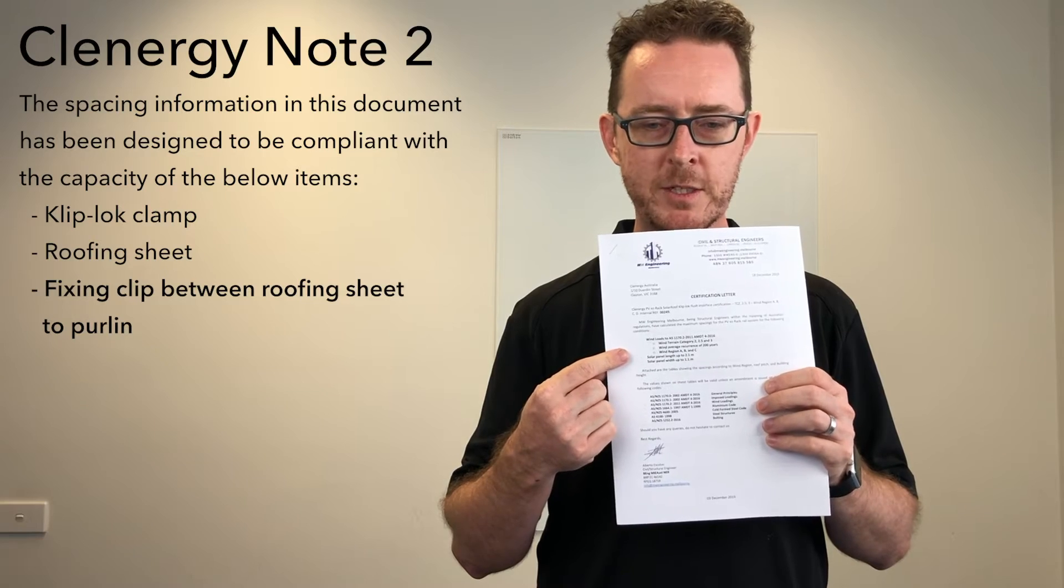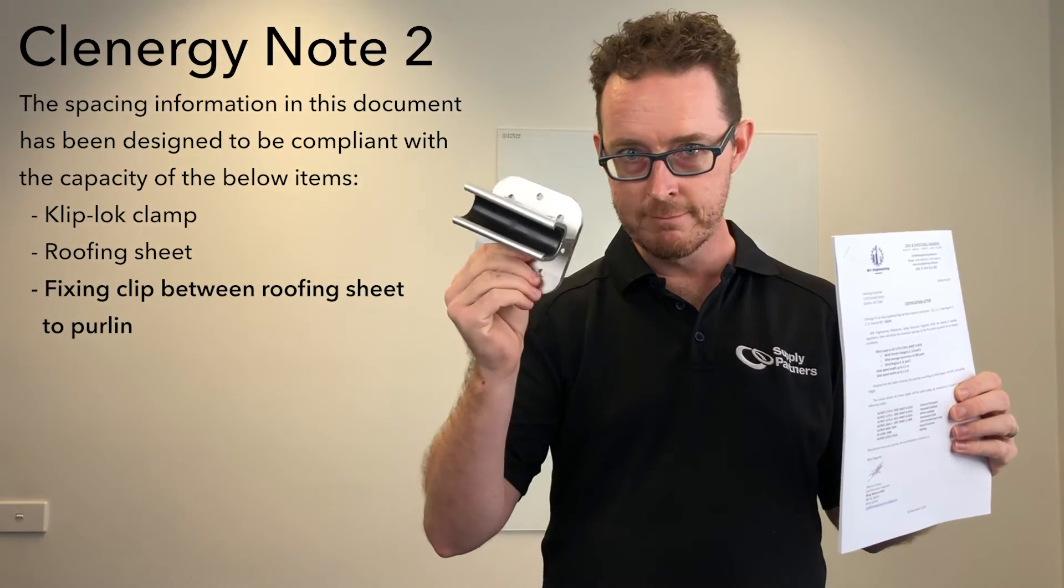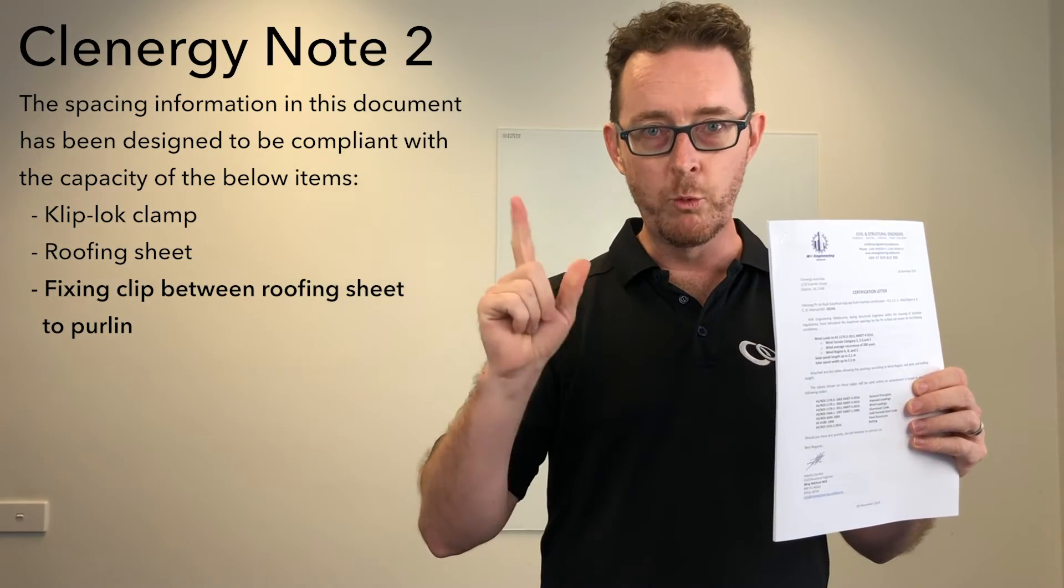By comparison, in Clenergy's latest engineering documentation, it says, note number two, the spacing information in this document has been designed to be compliant with the capacity of the below items, the clip lock clamp, the roof sheet, and the fixing clips between the roof sheet and the purlin.